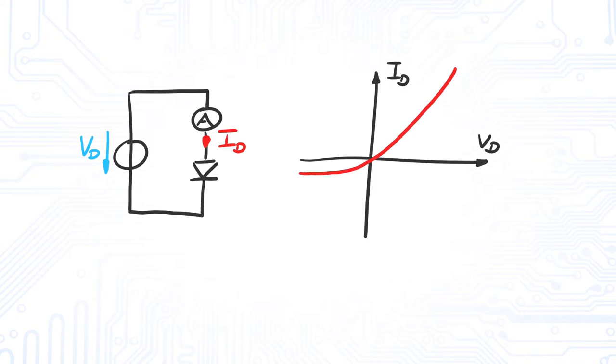And indeed, the current is determined by an exponential function, as our friends over at the physics department have shown.